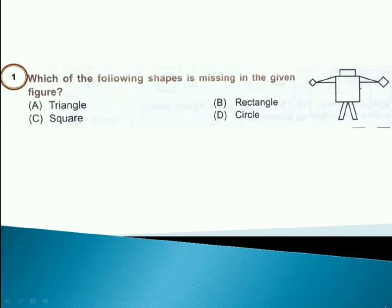Which of the following shapes is missing in the given figure? Answer is option D.